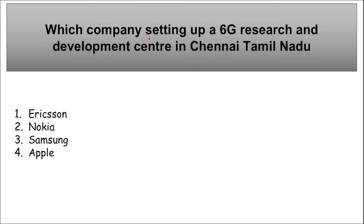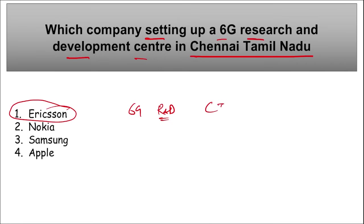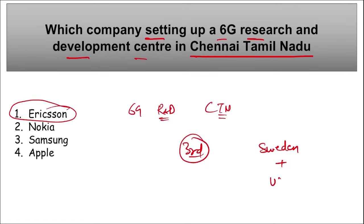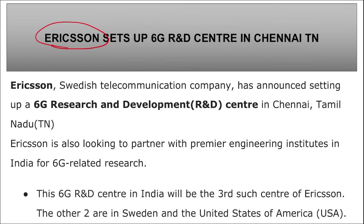Ericsson, a Swedish telecommunication company, has set up a 6G research and development center in Chennai, Tamil Nadu. Ericsson is also looking to partner with premier engineering institutes in India for 6G-enabled research. This 6G R&D center in India will be the third such center of Ericsson — the other two being in Sweden and the USA.